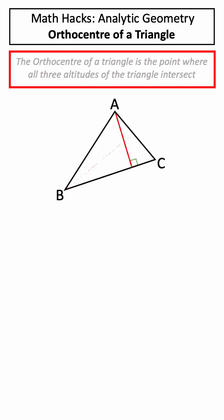So here we have a triangle, and if we draw out each of our altitudes, we'll see that they intersect at a single point known as the orthocenter.